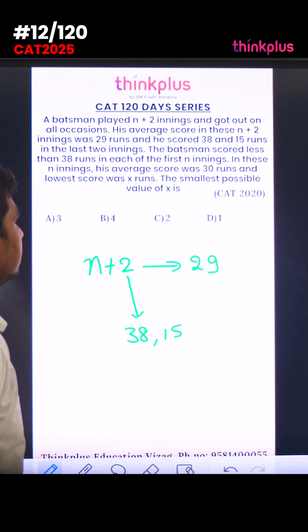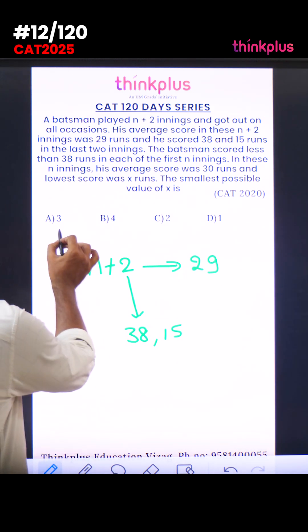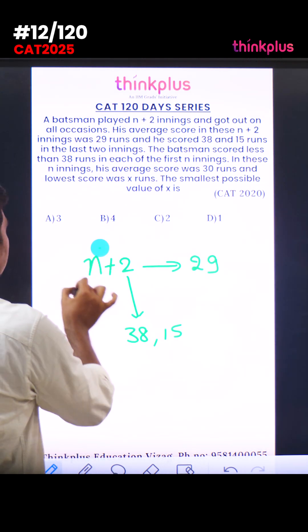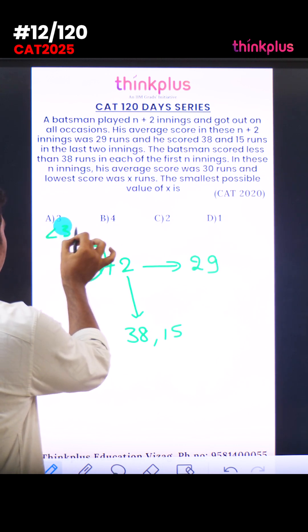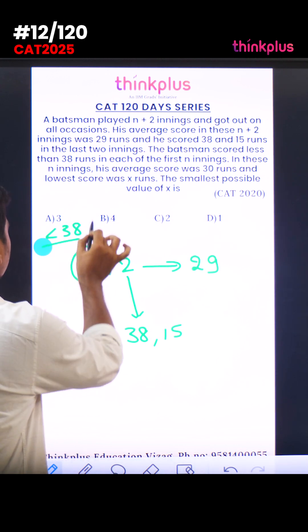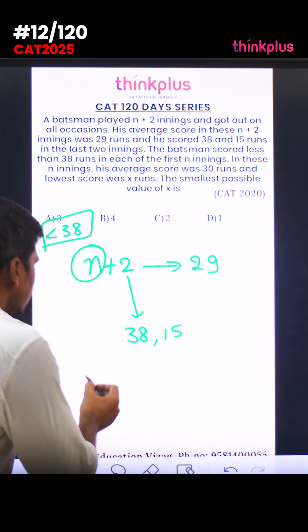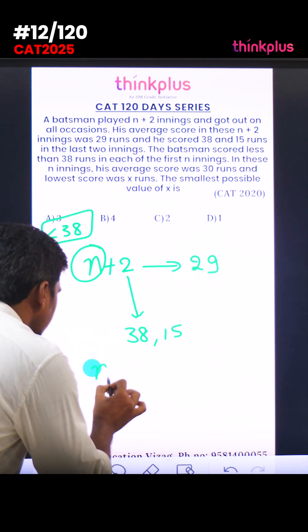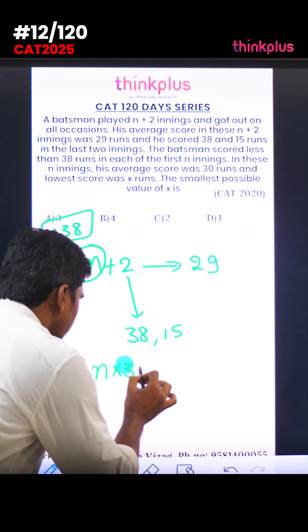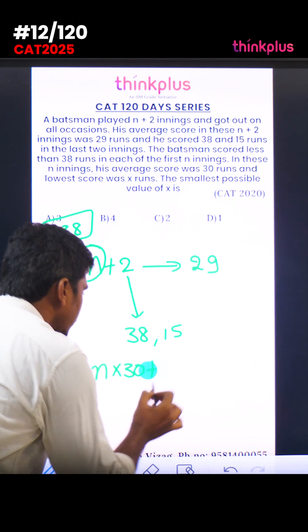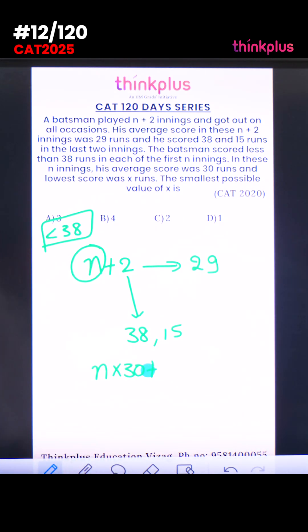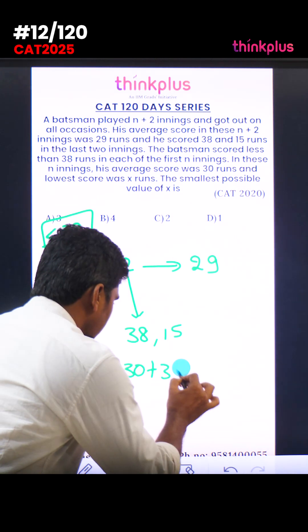And the batsman scored less than 38 runs in each of the first n innings. In the first n innings, each score is less than 38. In these n innings, his average score was 30. Last two innings scores: 38 plus 15 equals 53.